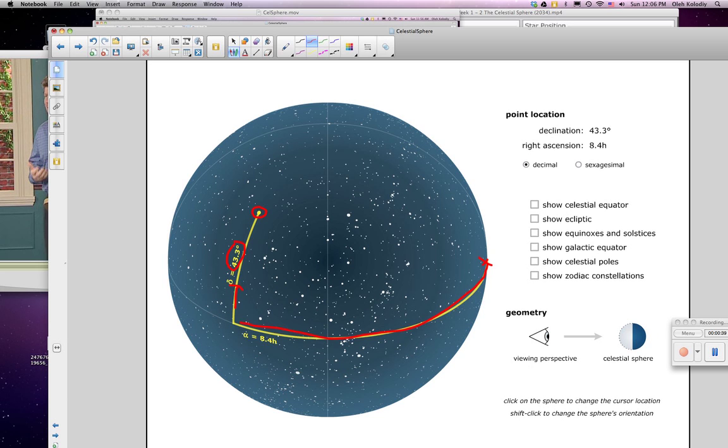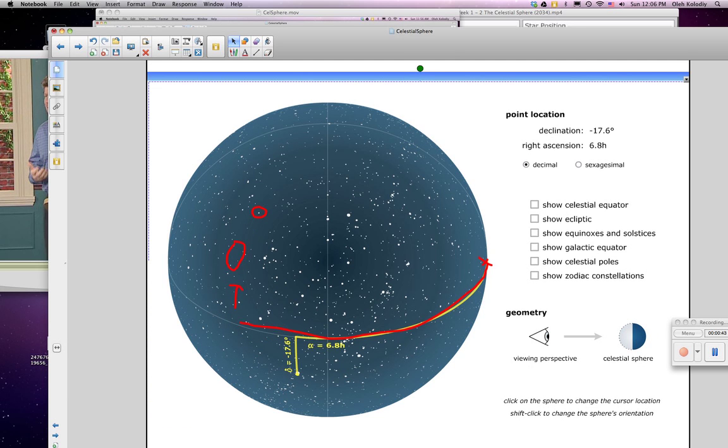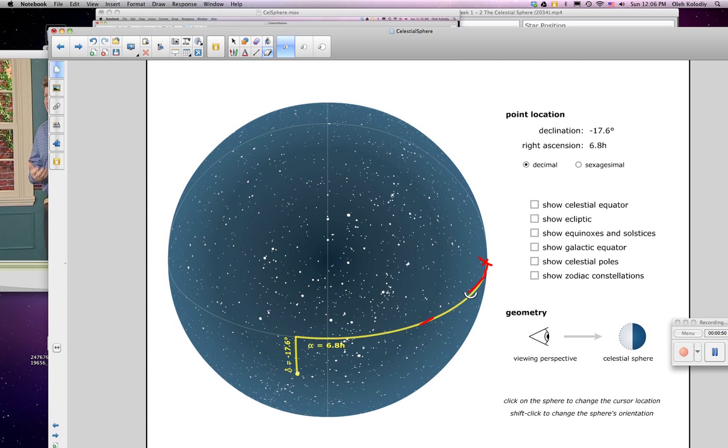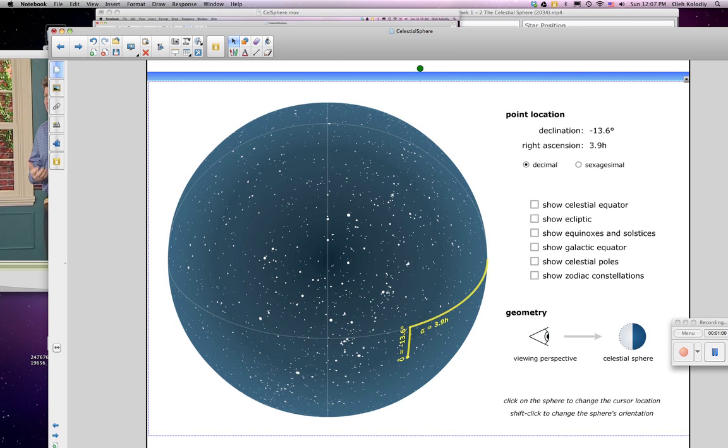Now, a star, for example, located down here, will have a negative declination. Or we can say that it is south of the celestial equator. If it's located right here, this particular star also has a negative declination at only 3.9 hours. Zero hours is right at the corner here.